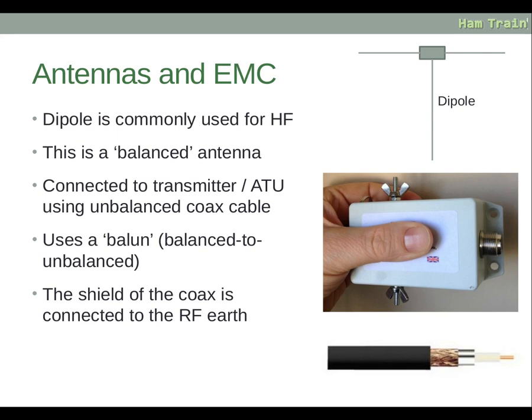For antennas and EMC, a dipole is commonly used for HF. This is a balanced antenna, connected to the transmitter or ATU using unbalanced coaxial cable. A balun is used to allow the unbalanced coax to match to the balanced dipole, and the shield of the coax is connected to the RF earth.